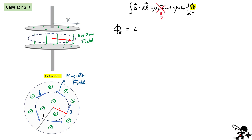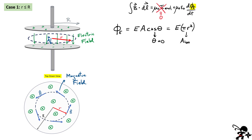The electric field goes from positive to negative, and the area vector associated with that area is also in the perpendicular direction — perpendicular to the plate — which means the field and the area vector are parallel to each other. So the angle theta equals zero. That leaves the electric flux as simply the field multiplied by the area, and the area we're looking at is pi r squared — the area of the loop.